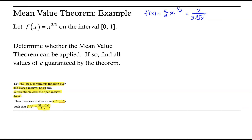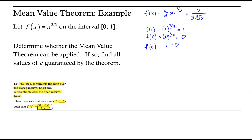Now, f prime at c has to equal f at b minus f at a over b minus a. f at our right endpoint: f at 1 is 1 to the 2 thirds, which equals 1. f at our left endpoint: f at 0 is 0 to the 2 thirds, which equals 0. So f prime of c equals 1 minus 0 over 1 minus 0, which means f prime at c should equal 1.